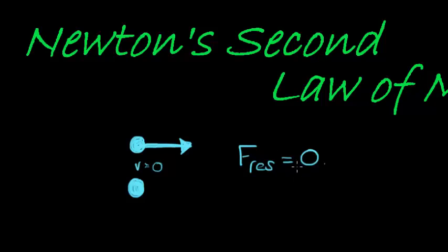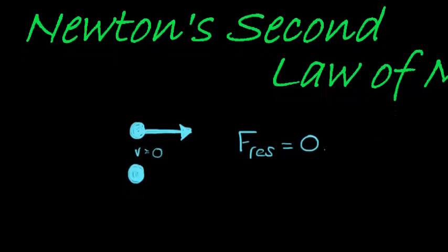That is what the first law comes down to. The resultant force is acting on it, in other words adding up all of the vector forces will give us zero. Now what does the second law say?